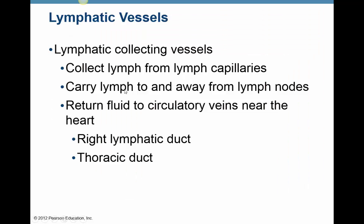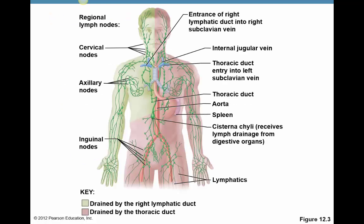We'll always see lymphatic capillaries intertwined with blood capillaries, acting as sewer lines picking up excess fluid and taking it back to the blood vessels near the heart. The major passageways that connect with the veins near the heart are the right lymphatic duct and the thoracic duct. The thoracic duct enters into the left subclavian vein, and the right lymphatic duct on the right side of the body enters into the right subclavian vein — that's where lymph re-enters the general blood supply.